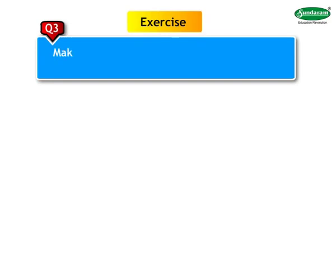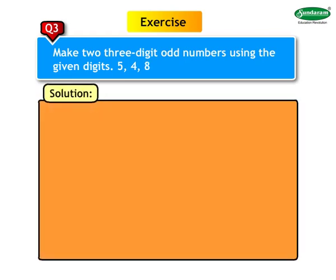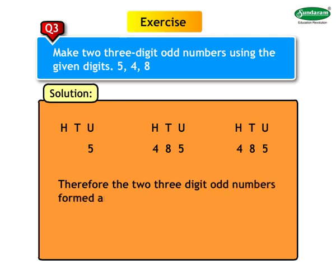Question 3: Make two 3-digit odd numbers using the given digits 5, 4, and 8. Among the digits given, only 5 is an odd digit. We will make 3-digit numbers in which the digit in the units place is 5, so that the number formed will be an odd number. Let us write 5 in the units place first. The other two digits are 4 and 8, which can go in the hundreds or tens place. Therefore, the two 3-digit odd numbers formed are 485 and 845.